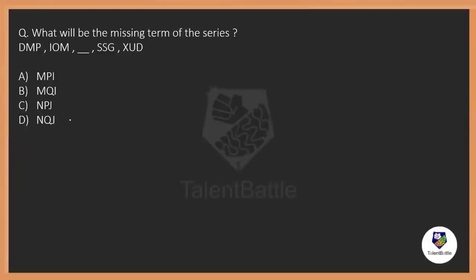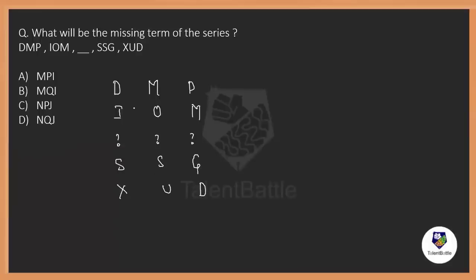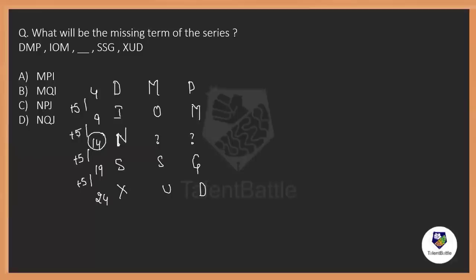Now one more question from the concept of letter series itself. As we already discussed, whenever you have a letter series question, you should apply alphabetical numbering — it will be very easy. Looking at the first row of letters: 4, 9, 17, 24. 4 plus 5 is 9; 9 plus 5 is 14; 14 plus 5 is 19; 19 plus 5 is 24. So which alphabet stands for 14? It's N. That means this position should be N, not what was given — so that entry is wrong and it should be N.